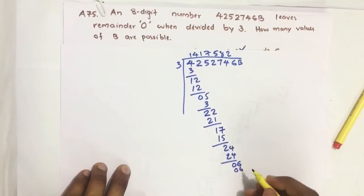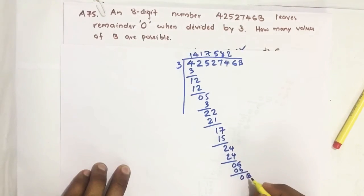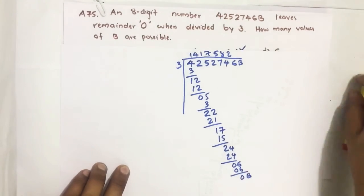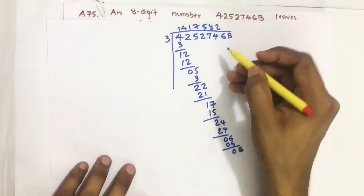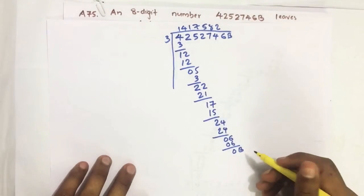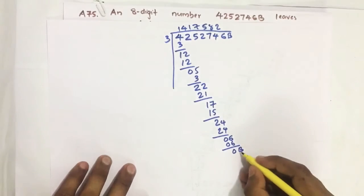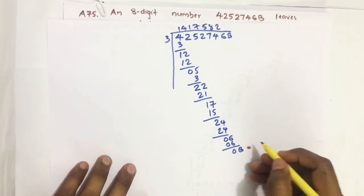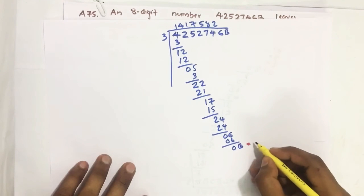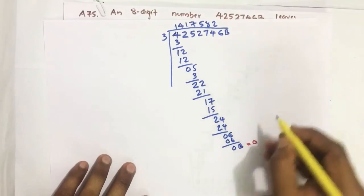Two threes are 6, then B. Now we got B. If this number is exactly divisible by 3, this B also must be divisible by 3.